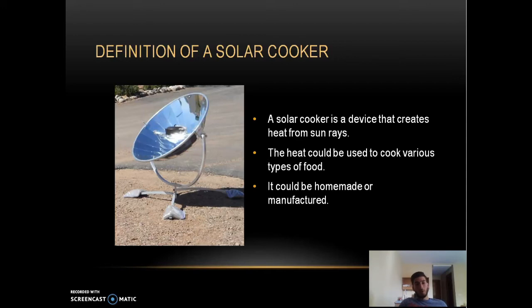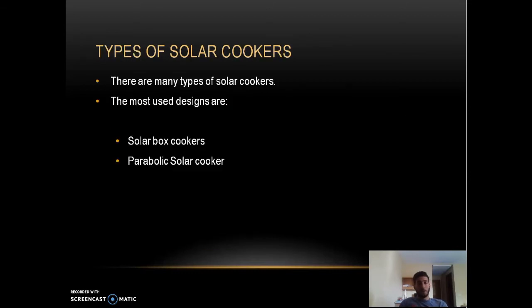So what is a solar cooker? A solar cooker is a device that creates heat from sun rays — it takes solar radiation and transforms it into heat, which can be used to cook any type of food. Solar cookers can be homemade or manufactured. There are mainly two types: the solar box cooker and the parabolic solar cooker.